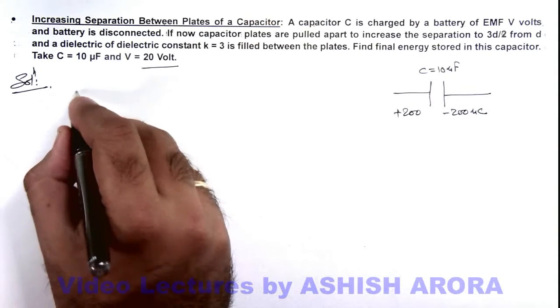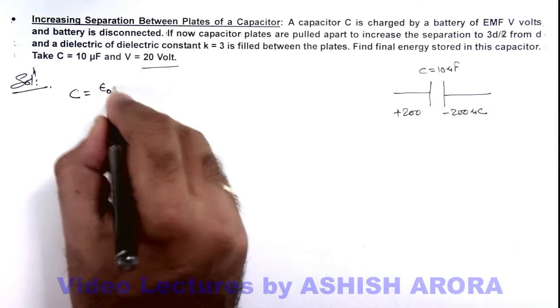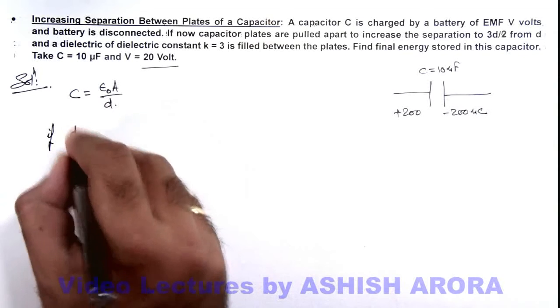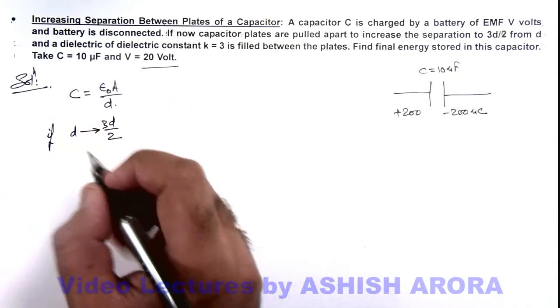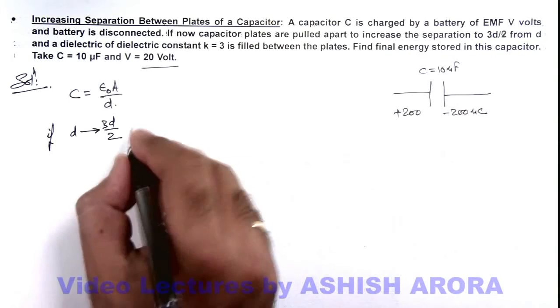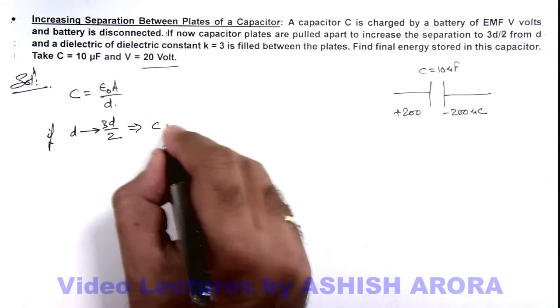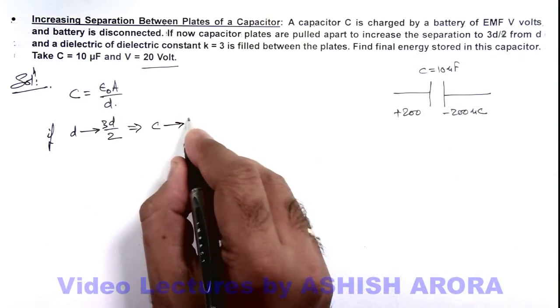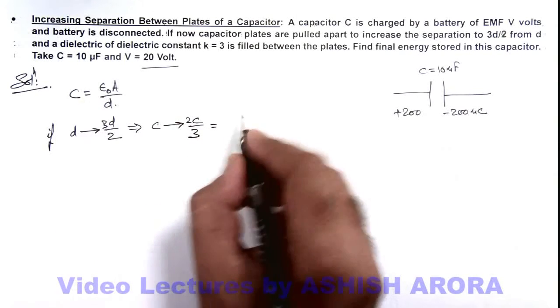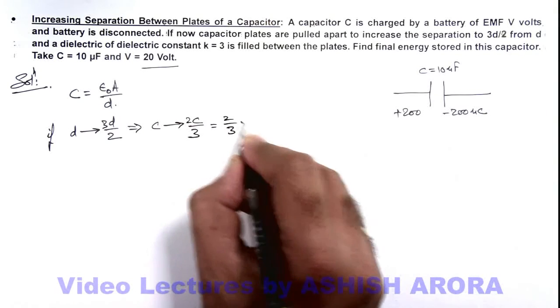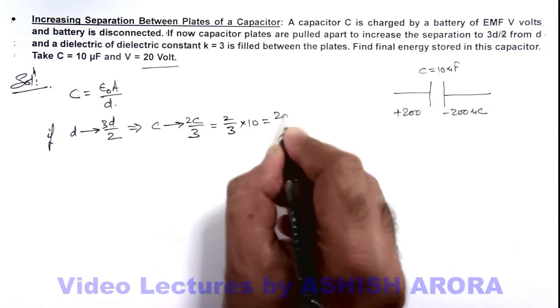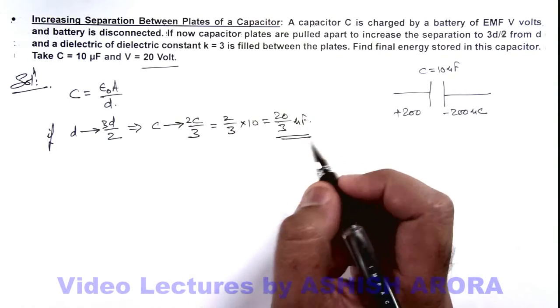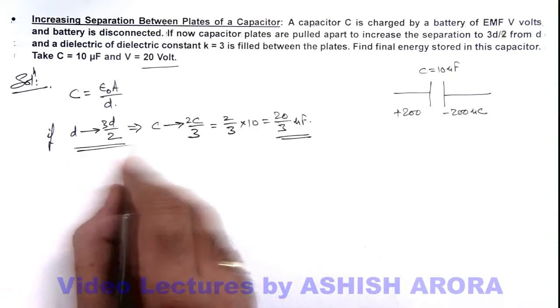Here we know that the value of C is given by epsilon naught A by d. So here if d is changed to 3d/2, which is given over here, this implies the value of capacitance will change to - if you change the value of d to 3d/2, it will change to 2C/3. So here it will be 2/3 multiplied by 10, that is 20/3 microfarad. That is the final capacitance after increasing the separation from d to 3d/2.